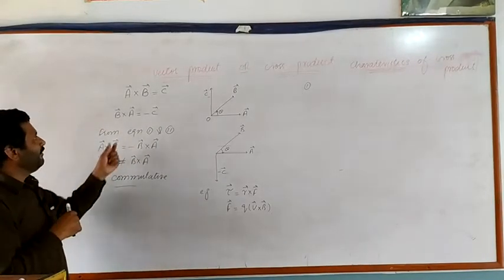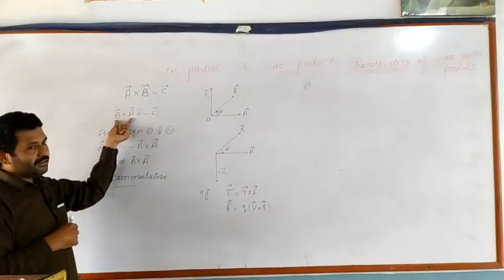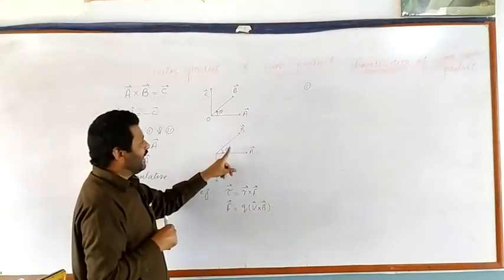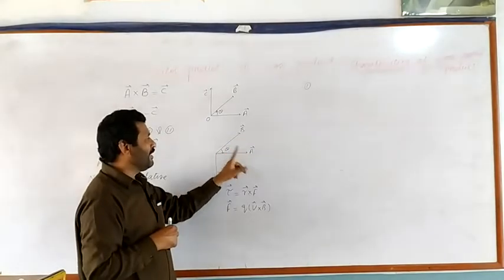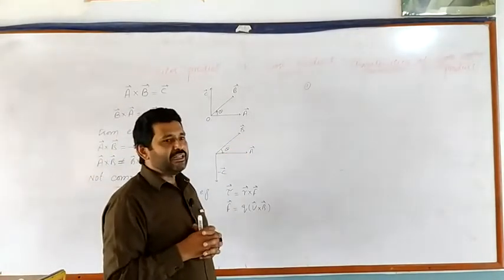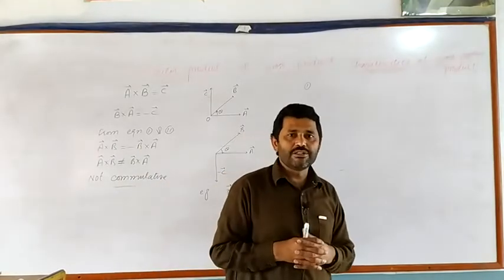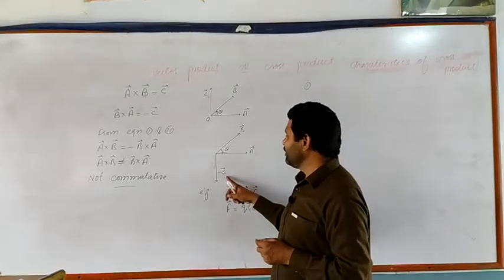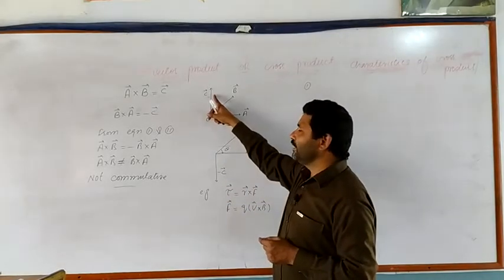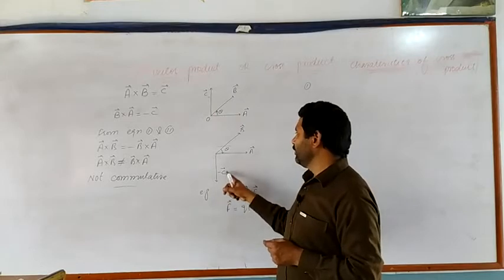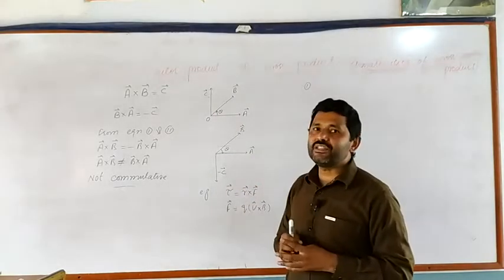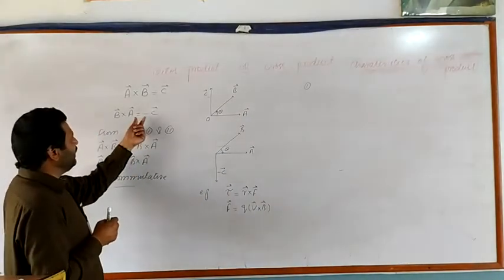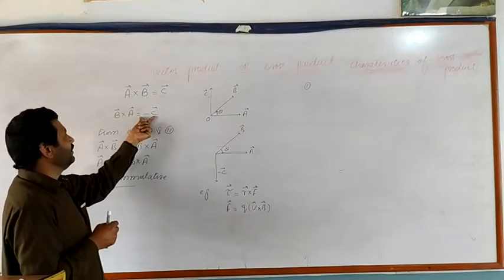Now we multiply vector B by vector A. Here, the first vector is B and second is vector A. The direction of theta is from B to A. We will also find the resultant of vector B cross vector A by the right-hand rule. It is clear from the right-hand rule that the direction of this resultant is opposite to that of C. So we represent vector B cross vector A with negative C.